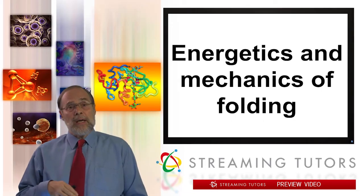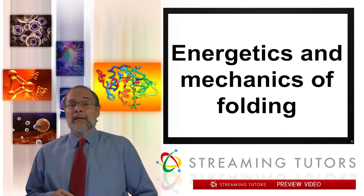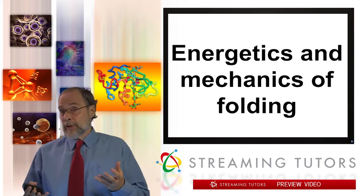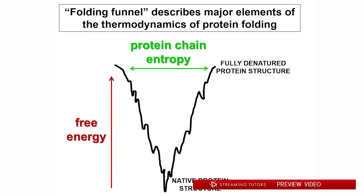Let's look at the energetics and mechanics in more detail and introduce a couple of more exotic chemical interactions that contribute to the overall structure of some proteins — examples that will be really useful as we move forward. This is what's called a folding funnel. These are sometimes drawn in two dimensions as here, or in three dimensions making a folding landscape — a funnel-shaped landscape. What's intended to be emphasized here is that the width of this funnel is an expression of the protein chain entropy.